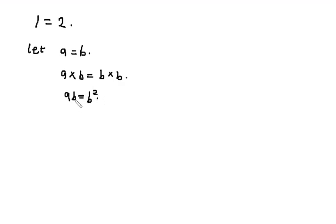Now I can also subtract both sides by A squared. So if I subtract both sides by A squared, I'll have AB minus A squared equals B squared minus A squared.